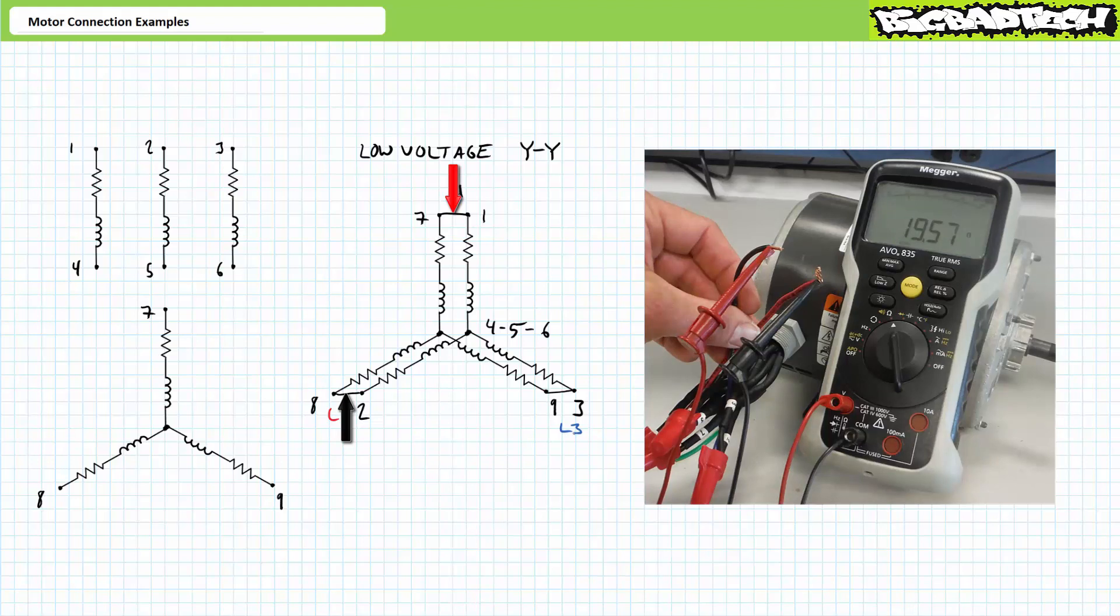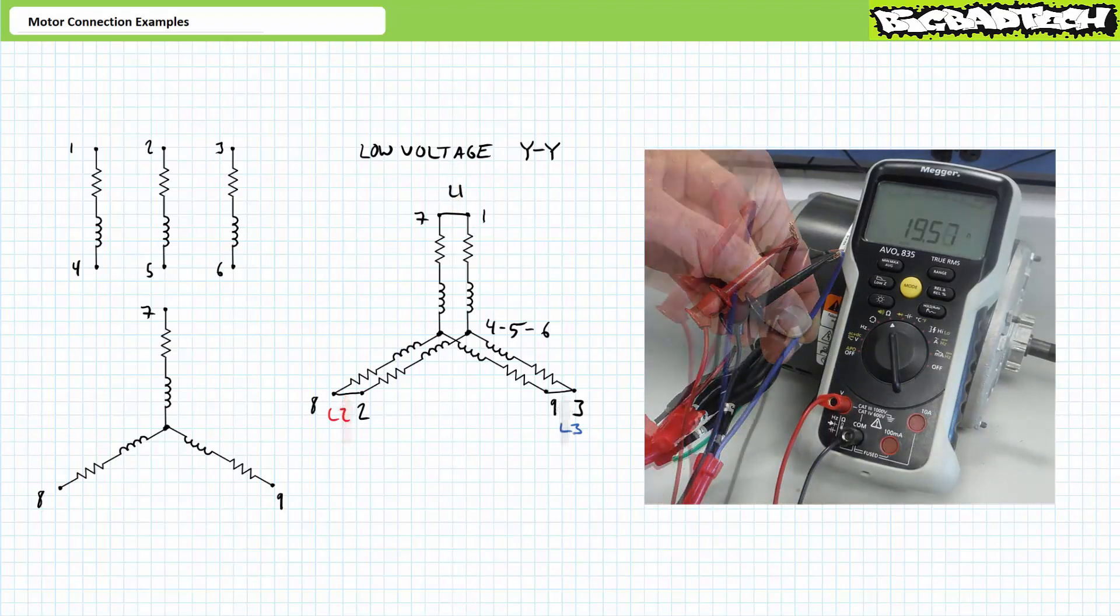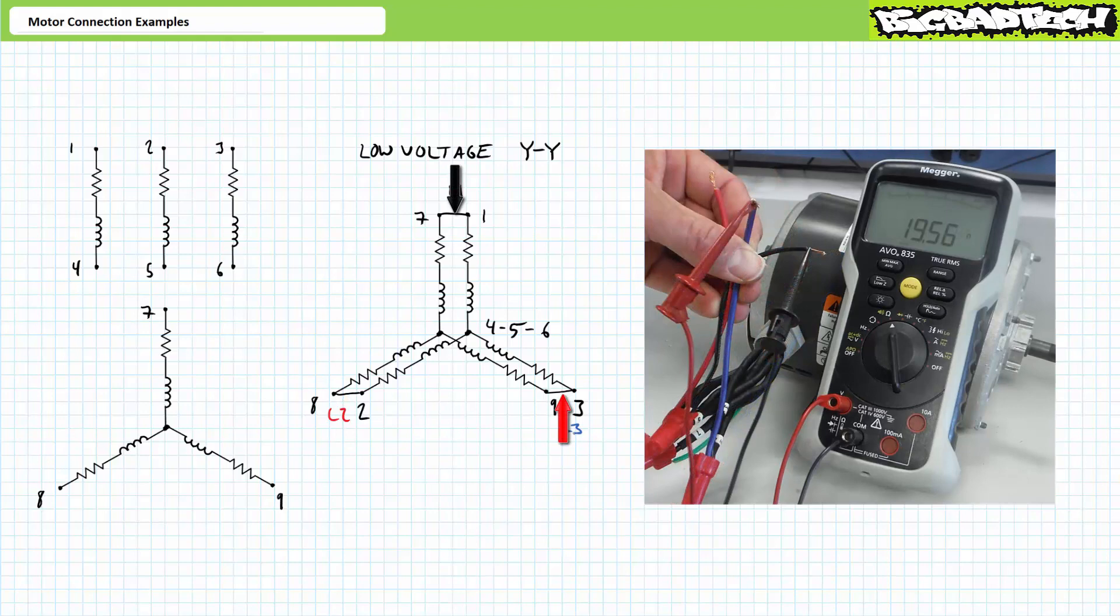The same observations can be made about points two-eight to three-nine and three-nine back to one-seven. An ohmmeter between conjoined terminals two-eight and three-nine does indeed see resistance of roughly 20 ohms as does an ohmmeter between conjoined terminals three-nine and one-seven as we might expect.